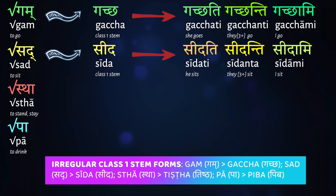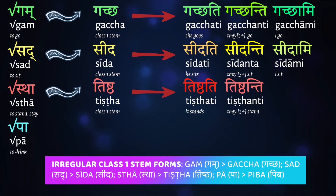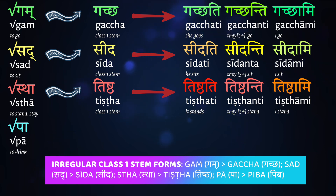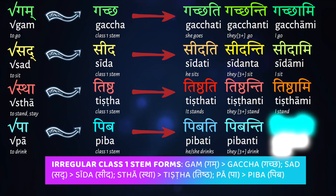There are a couple more very common class 1 verbs to be careful about. One is the super common verb sthā, meaning 'to stand or stay,' which turns into the stem tiṣṭha. So we get sthā tiṣṭhati, 'it's standing'; te tiṣṭhanti, 'they are standing'; tvaṃ tiṣṭhasi, 'you are standing'; ahaṃ tiṣṭhāmi, 'I am standing.' Finally, there's the root pā, meaning 'to drink,' which has the irregular stem piba — giving pibati, saha pibati, 'he's drinking'; sā pibati, 'she's drinking'; te pibanti, 'they drink'; ahaṃ pibāmi, 'I drink.'